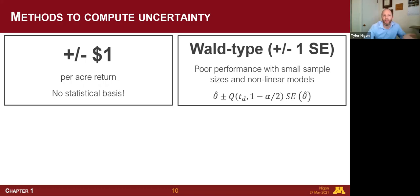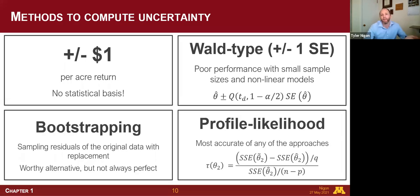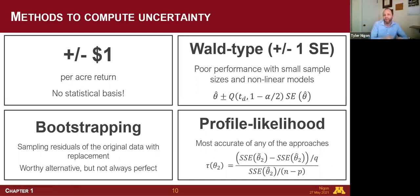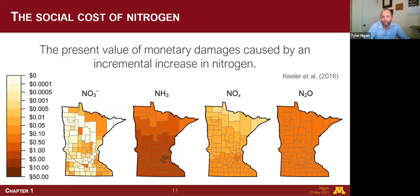In terms of actually calculating the uncertainty, there are three main methods: Wald-type, bootstrapping, and profile likelihood. They range from more simple to more complex. The gold standard is the profile likelihood approach, which uses the sum of squares in an iterative approach comparing against the EONR and then iterating away from the EONR until we no longer have a statistically significant relationship.